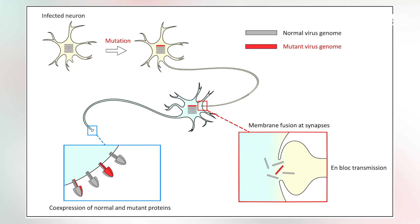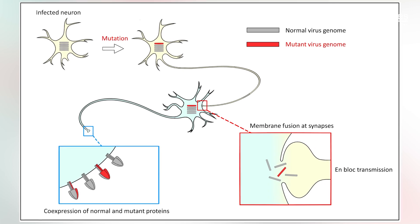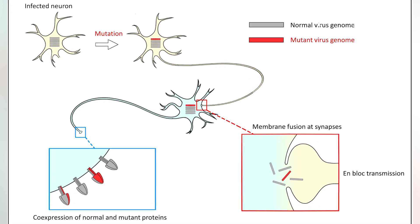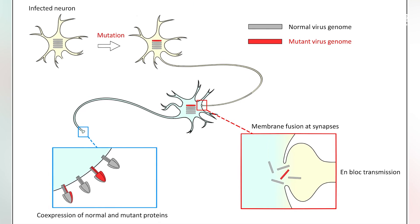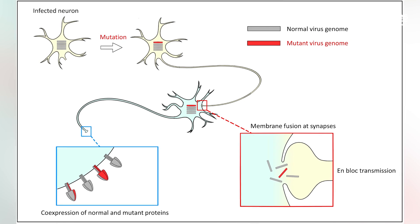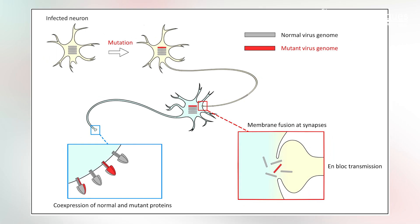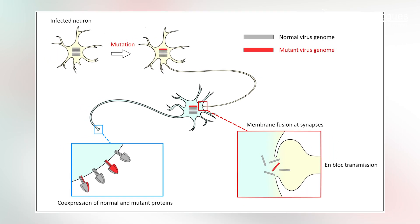The key player in allowing the measles virus to infect a cell is a protein called the fusion protein, or F-protein. In the team's previous studies, they showed that certain mutations in the F-protein put it in a hyperfusogenic state, allowing it to fuse onto neural synapses and infect the brain.